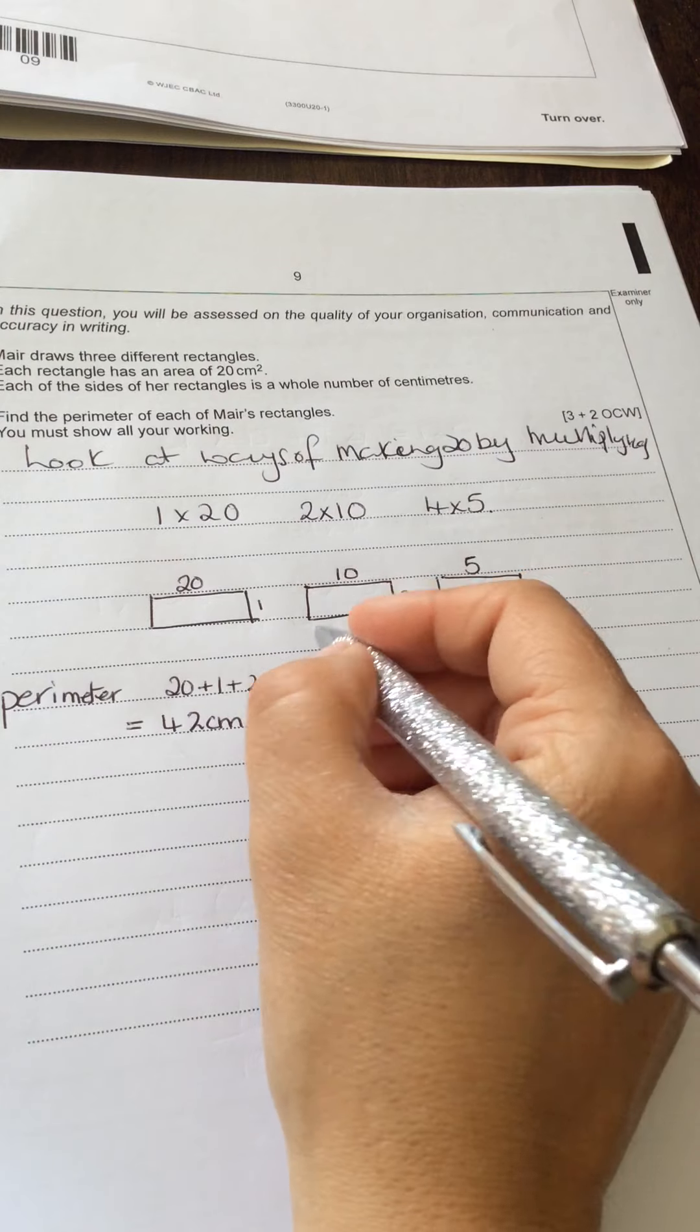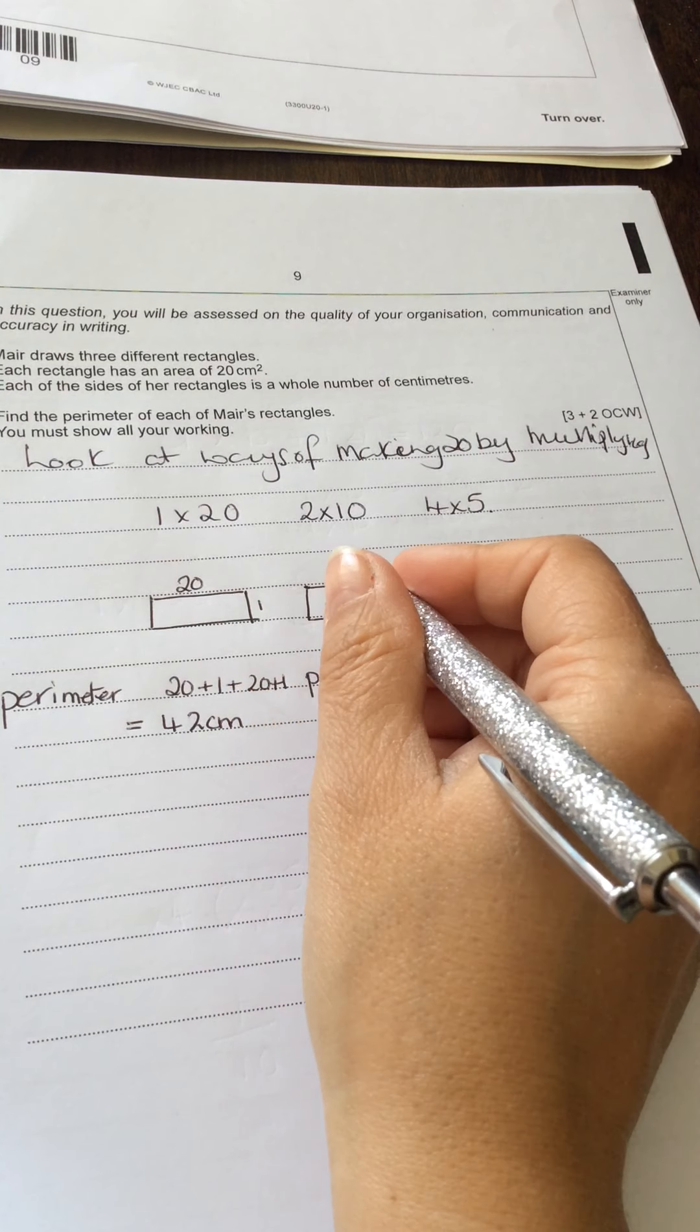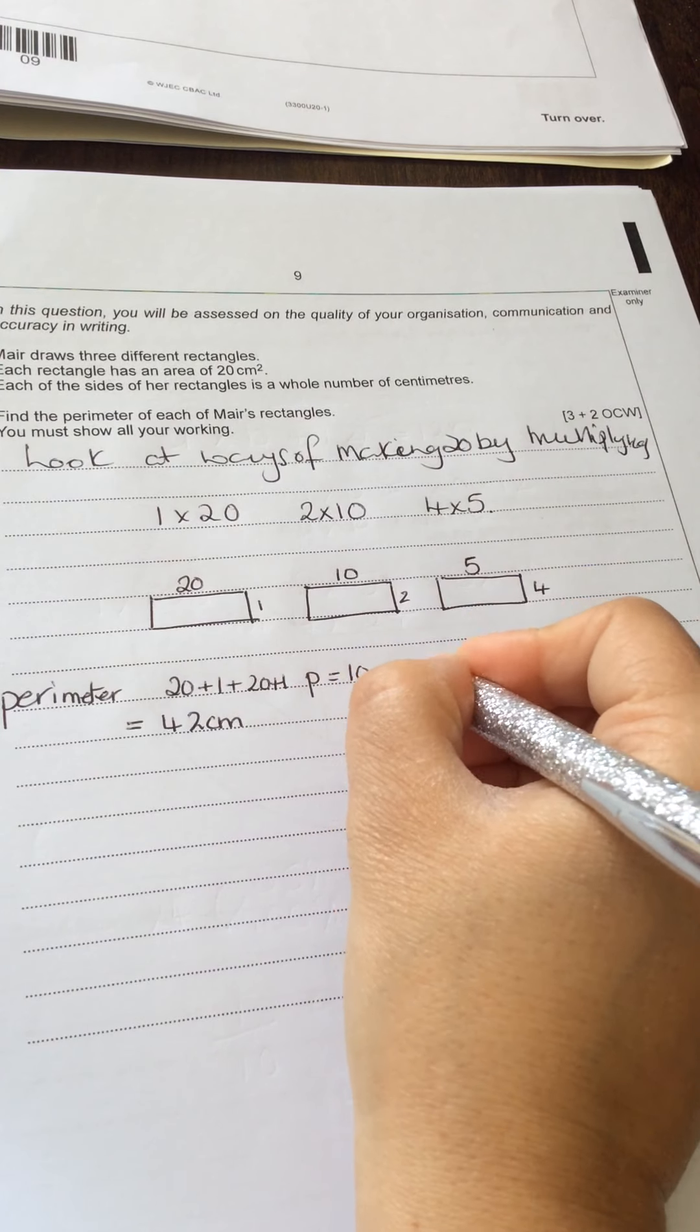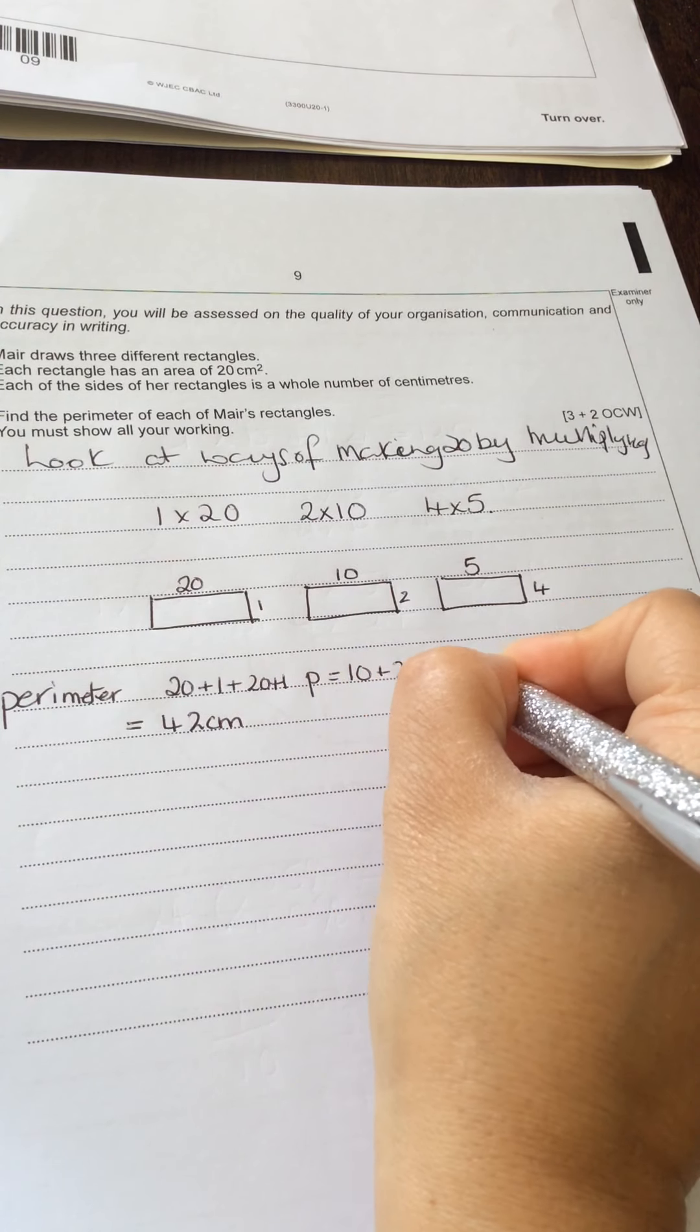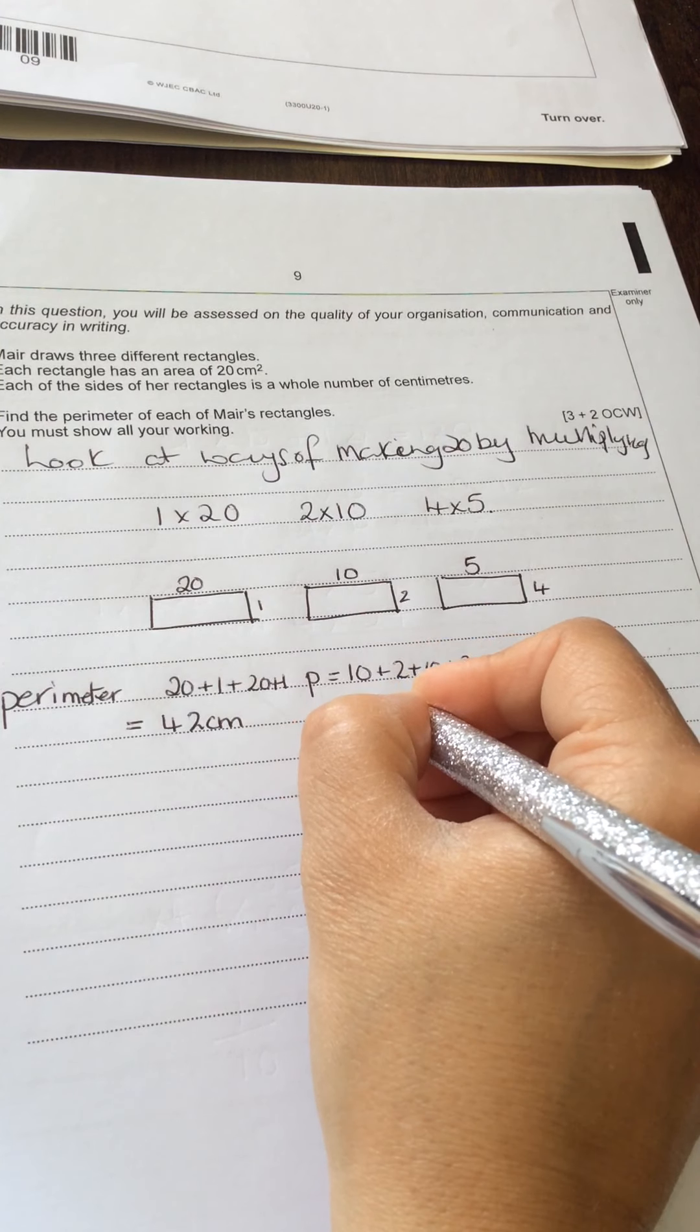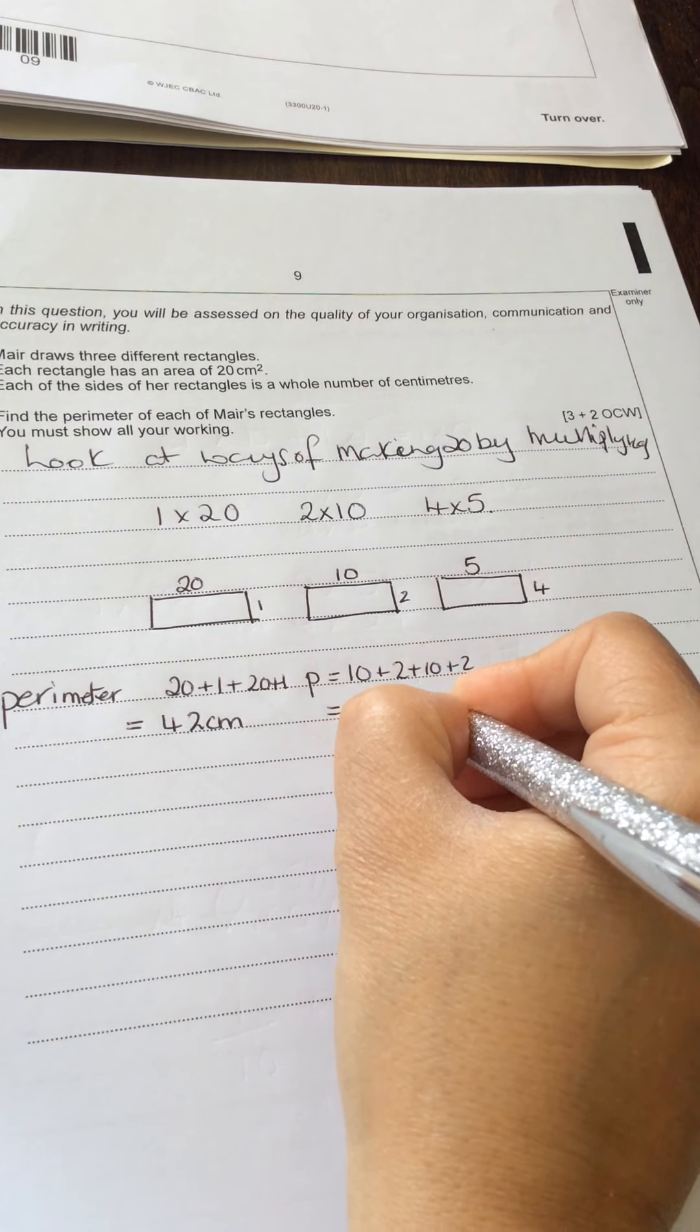For the next one then, the perimeter would be the 10 plus a 2 plus a 10 plus a 2, which is 24 centimeters.